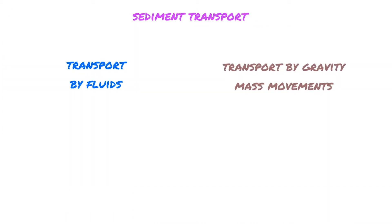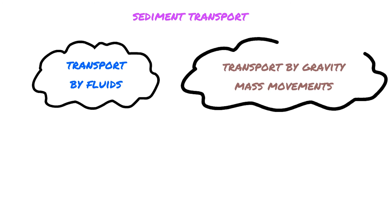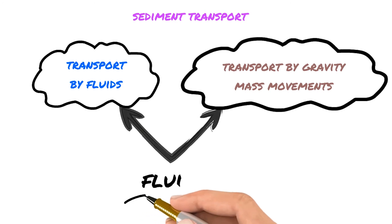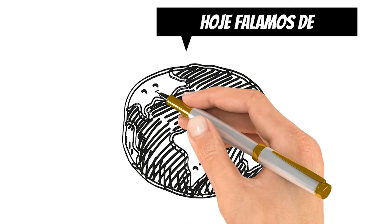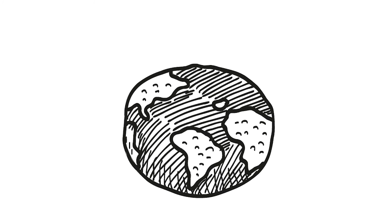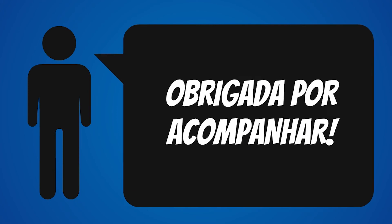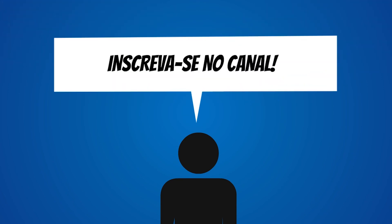Both so-called fluid transport and gravity transport involve, at some point, interaction with fluids. Therefore, in order to understand how this transport works and at which point particles stop being transported and get deposited — forming what we observe in outcrops — we must first understand the behavior of fluids. This will be the subject of our next video. Today we spoke about sediment transport and the types of transport by fluids and by gravity. Thanks for joining us! Leave your likes and comments below, and if you enjoyed this video, subscribe to the channel!